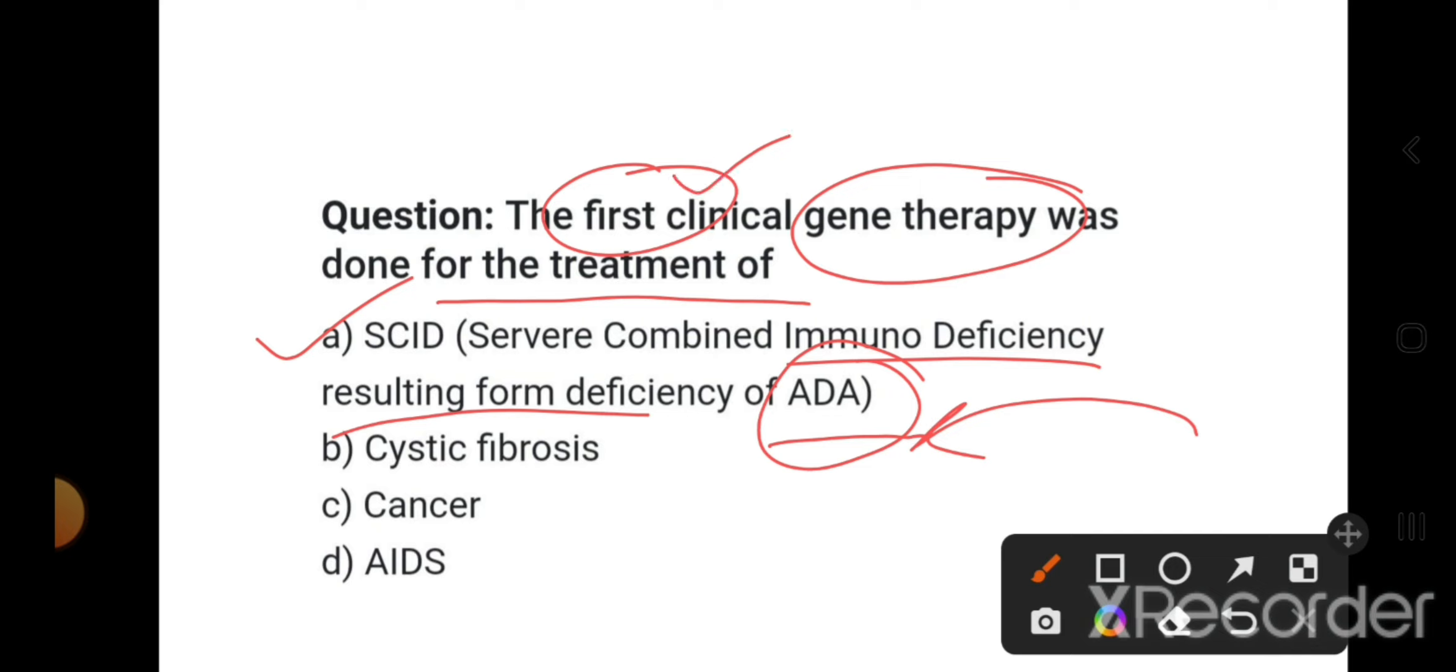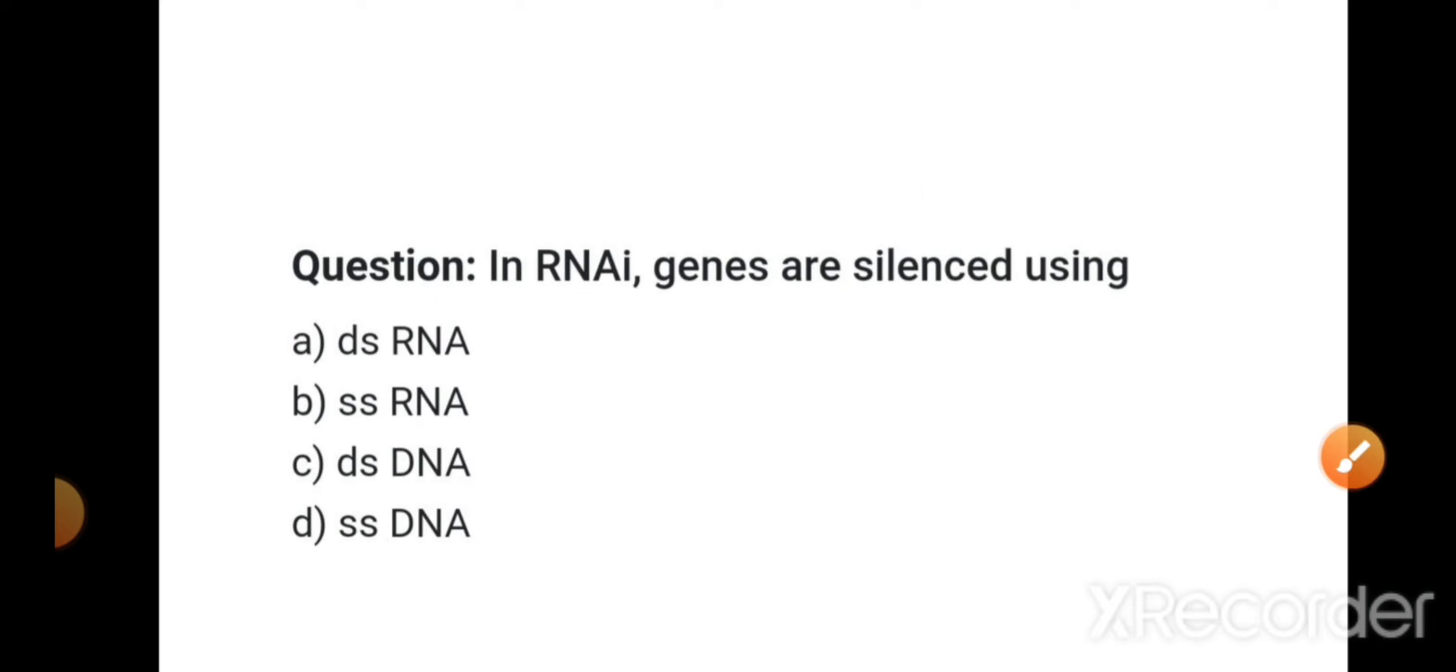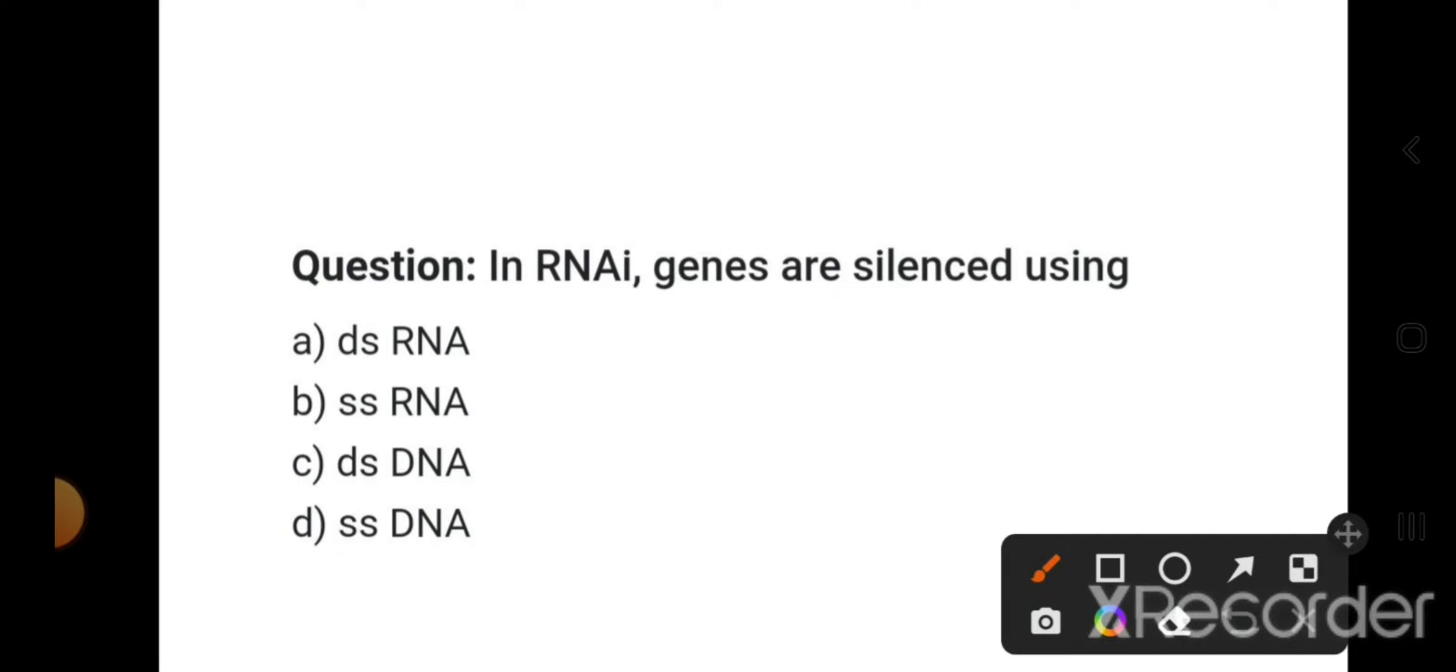In RNAi, genes are silenced using RNA interference. The desired genes can be silenced before they express through this technique known as RNA interference, by the formation of double-stranded RNA. After that, slicer and dicer complexes act on it and the gene gets destroyed.